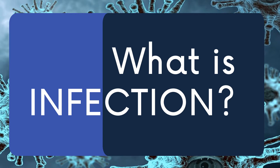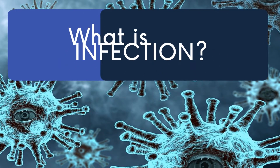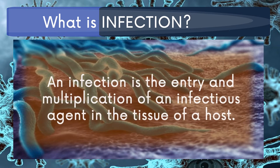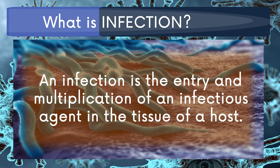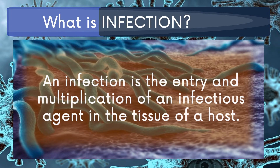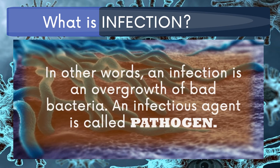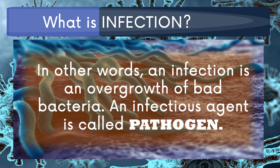What is it? An infection is the entry and multiplication of an infectious agent in the tissue of a host. In other words, an infection is an overgrowth of bad bacteria. An infectious agent is called a pathogen.